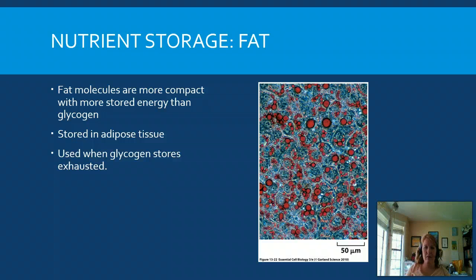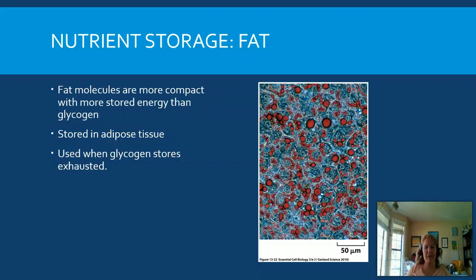We've talked a lot about sugars and energy, but what happens when there's an excess amount? Fat molecules are the way we tend to store this. We don't store a whole lot of energy in glycogen — in fact, it's about 15 minutes of energy stored in glycogen. After that, we store fat in adipose tissues because they are more energy-dense molecules. It's only once we've exhausted our glycogen stores that we start using those fat stores.